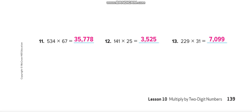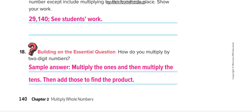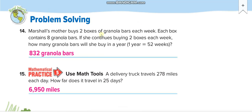Let us move to the next page now. Here it is. See this guys? First one. Marshall's mother buys two boxes of granola bars each week. Each box contains eight granola bars. So one box contains eight, two boxes, sixteen.